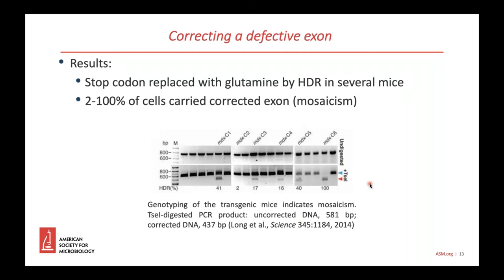Two bands are apparent in samples from five of the six mice, indicating these mice carry both corrected and mutant alleles — they are referred to as mosaics. The intensity of the bands indicates the relative proportion of each allele, and two to a hundred percent of the alleles were corrected in these transgenic mice.